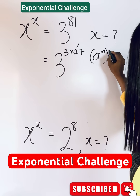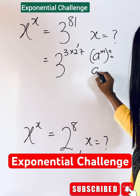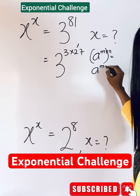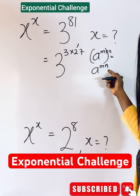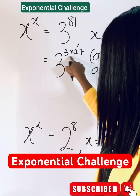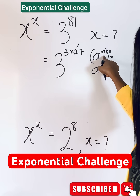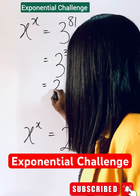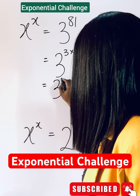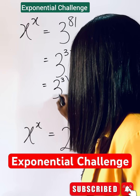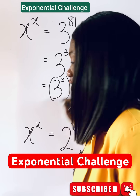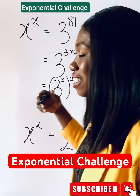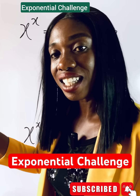it is the same as a raised to power m times n. This is multiplying in this form. So let's make it like this: it will be 3 raised to power 3, then raised to the power of 27. Now 3 raised to power 3 is 3 multiplied 3 times, which gives you 27, and that will be raised to the power of 27.